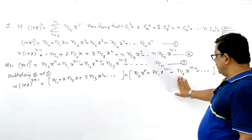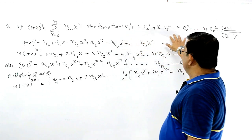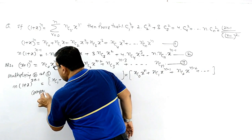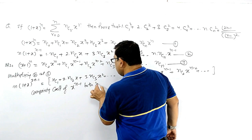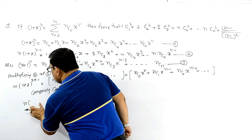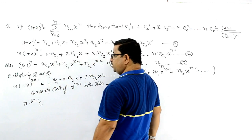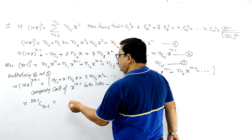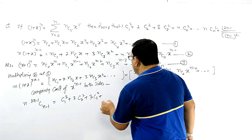nc₂ gives c₂² multiplied by 2, so our required result starts appearing. Now comparing coefficient of x^(n-1) on both sides: on the left side, the coefficient of x^(n-1) in n·(1+x)^(2n-1) is n · ₍₂ₙ₋₁₎C₍ₙ₋₁₎. On the right side it gives: c₁² + 2c₂² + 3c₃² + 4c₄² — exactly what we need to prove.